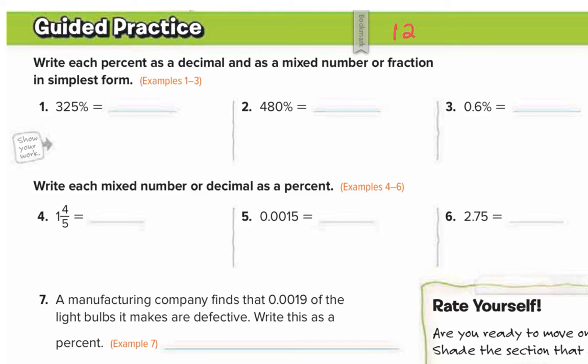We're starting on workbook page 120. Numbers 1 through 3 say write each percent as a decimal and as a mixed number or fraction in simplest form.